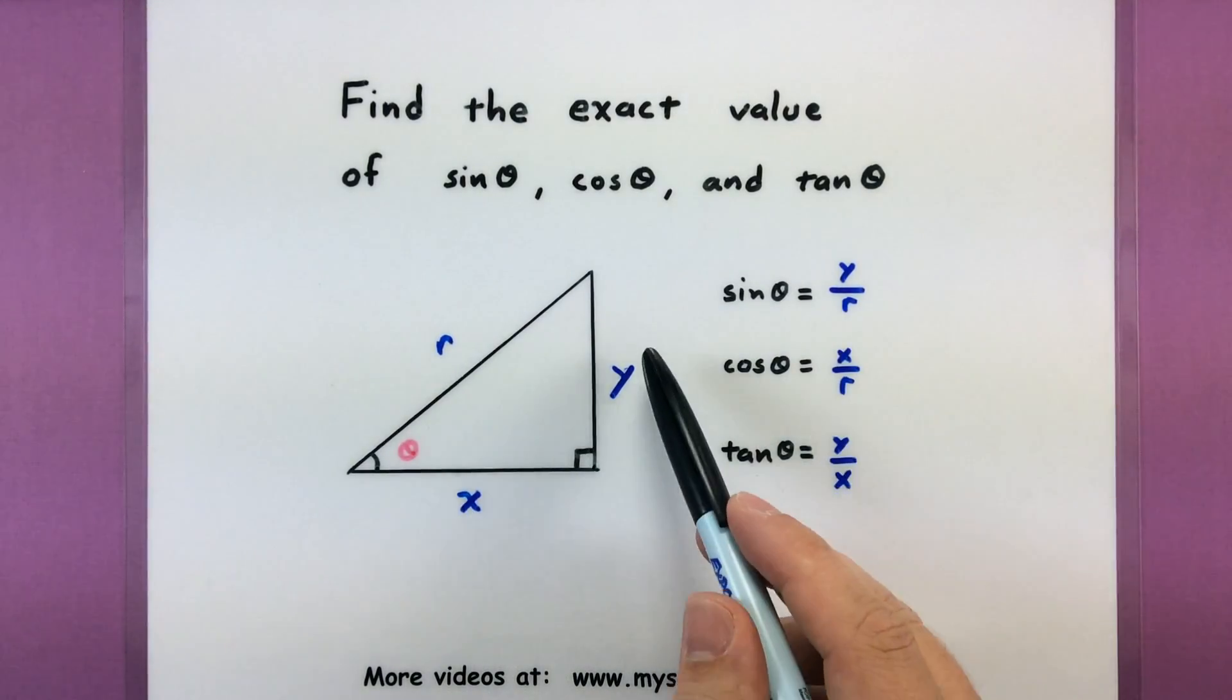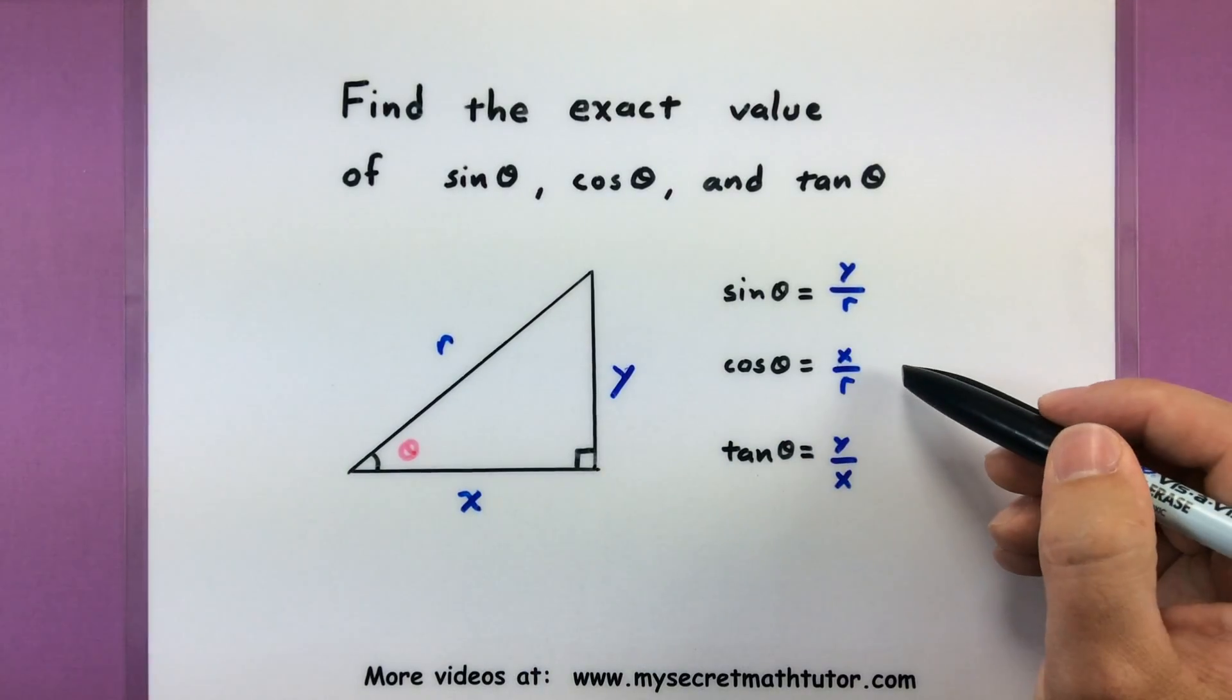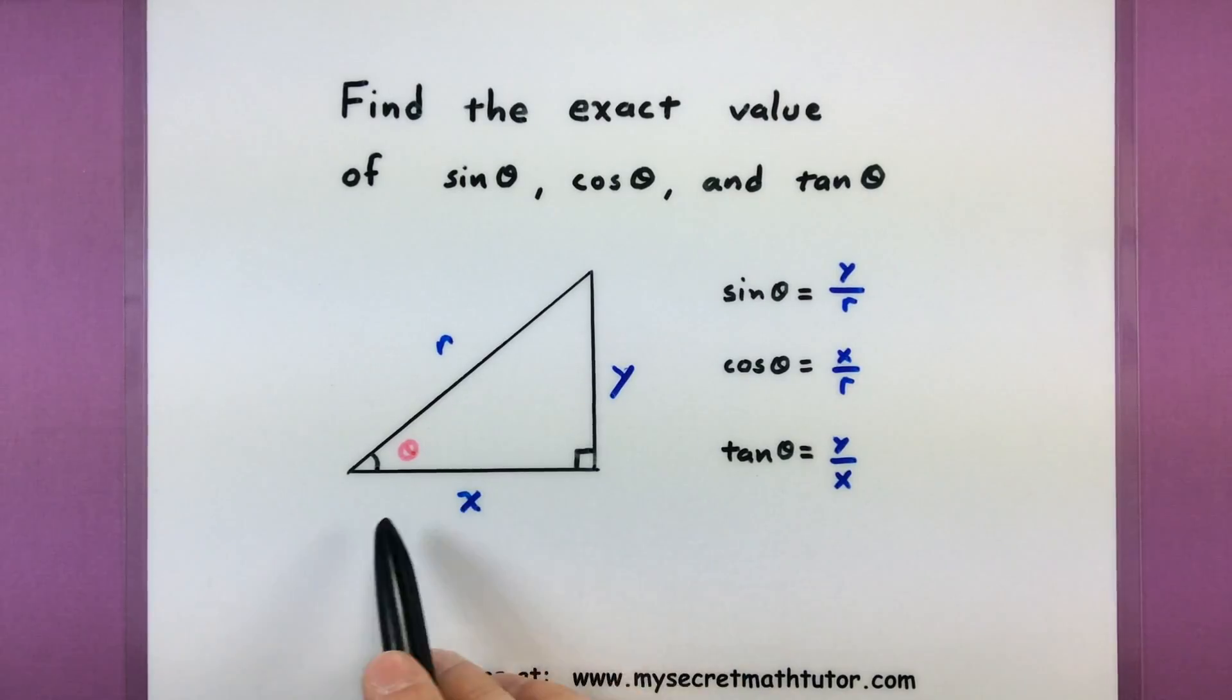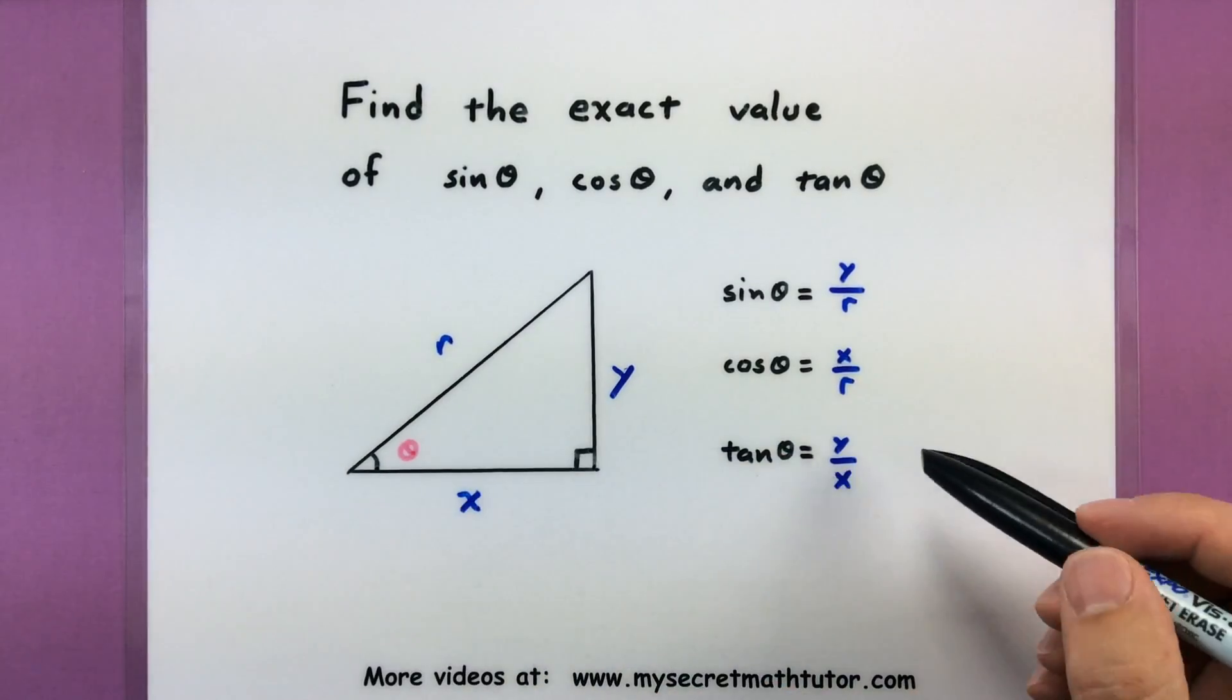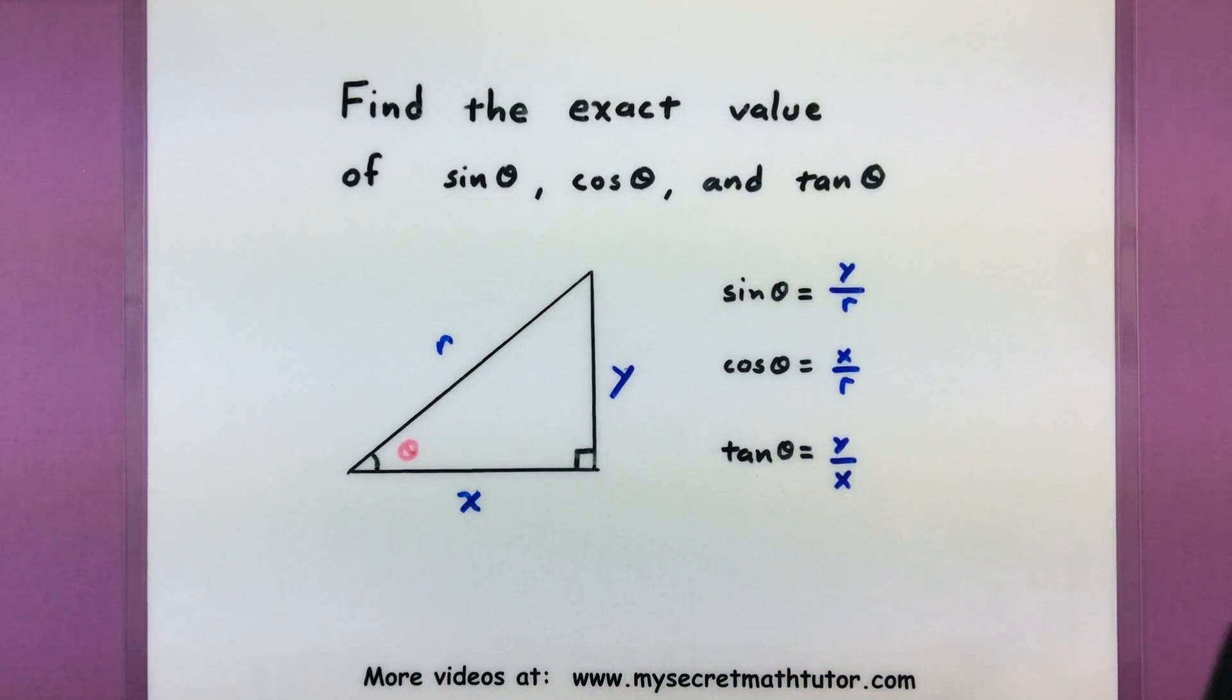if I want to do sine of theta, I need to take the opposite side and put it over the hypotenuse. If I want to do cosine, I would take the adjacent side and put it over the hypotenuse. And if I want to do tangent, I'd take the opposite and put it over the adjacent side.